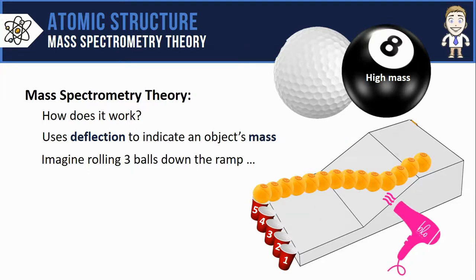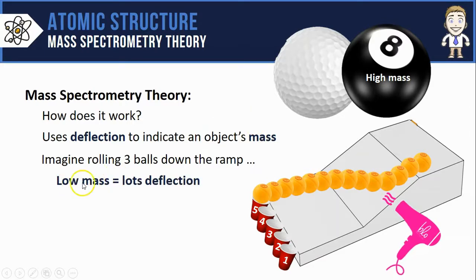It's going to be pushed much more or deflected much more by that hair dryer, and it might exit in cup five. The point is that a low mass object is going to experience lots of deflection.